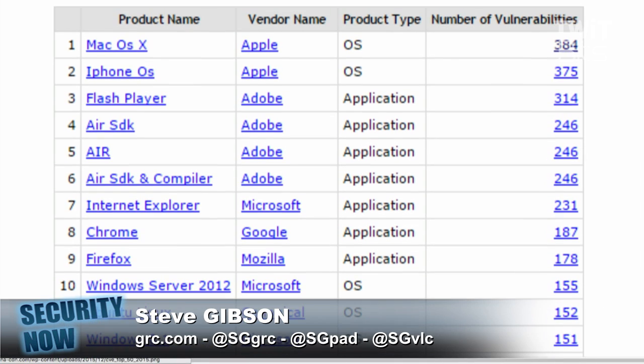In some ways you're penalized on this list if you are forthright about your problems, because that number presumably ultimately comes from the company itself — yes, it's the company registering vulnerabilities with the National Vulnerability Database.